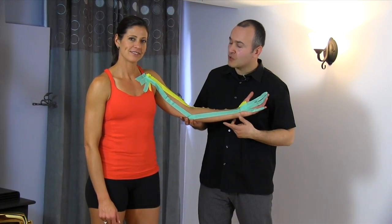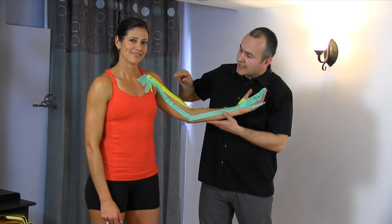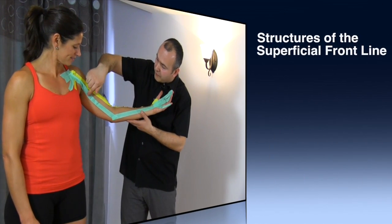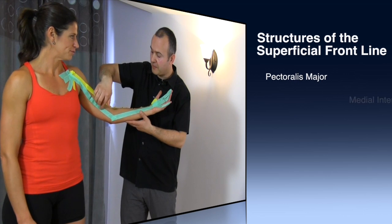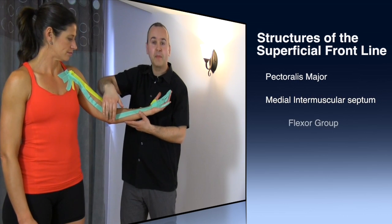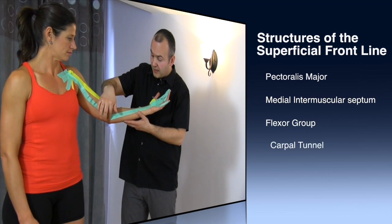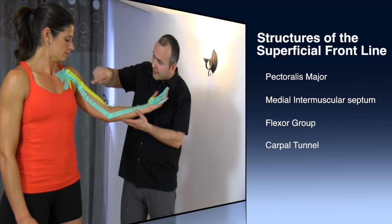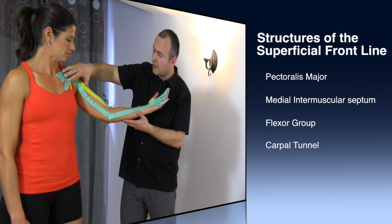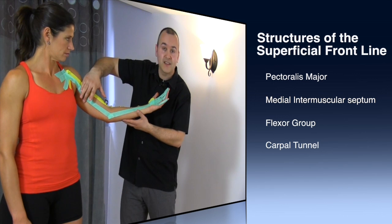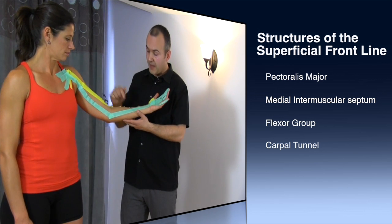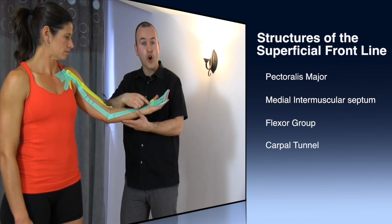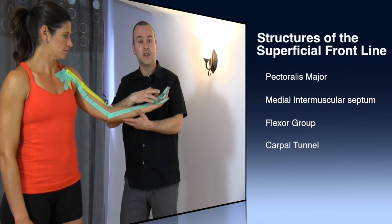Now that we've taken the superficial front arm line, when we examine it, you can see how it comes off the pectoralis major, comes down and follows the medial intramuscular septum, right into the medial epicondyle — which is a common complaint we see in the clinic, otherwise known as golfer's elbow. Looking at this line, you can see how a restriction in the pec, or even along the inside of the arm, can affect this point. Following it down, it goes through the flexor group, right into the carpal tunnel, and then fans out into the fingers.